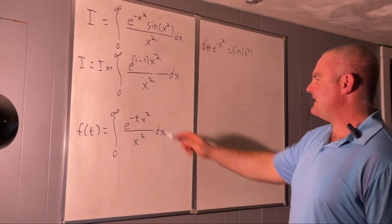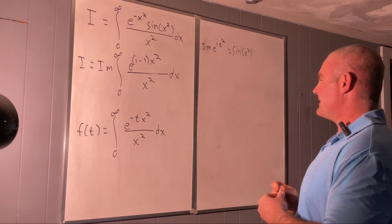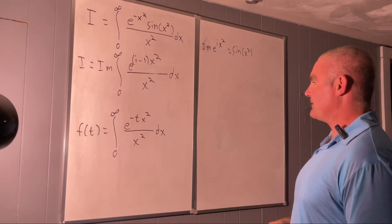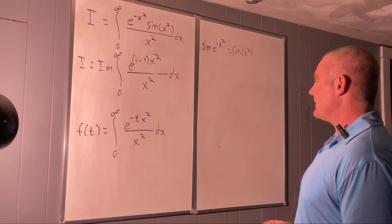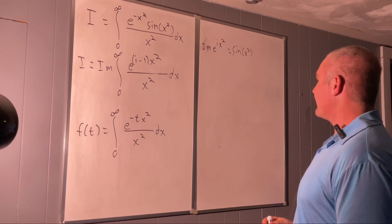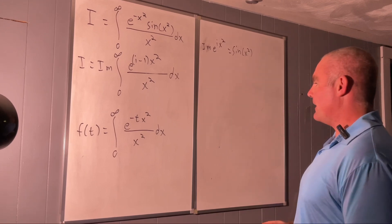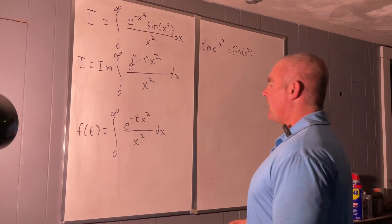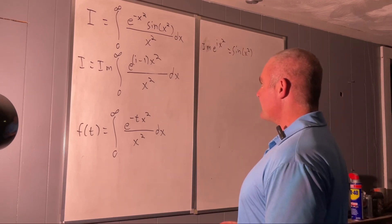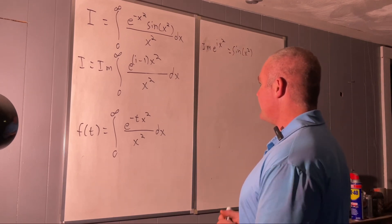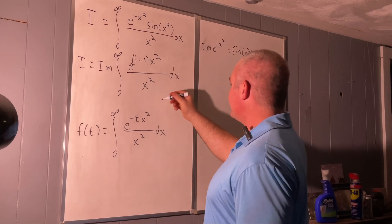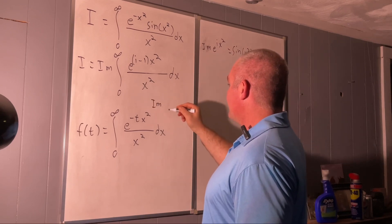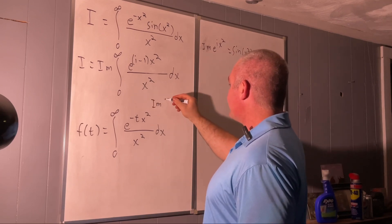I chose negative tx squared because it tends to work out better that way instead of positive tx squared — it might not matter in this case, but why take the chance. So that's our function of t. If we took the imaginary part of our function of t evaluated at a certain point...